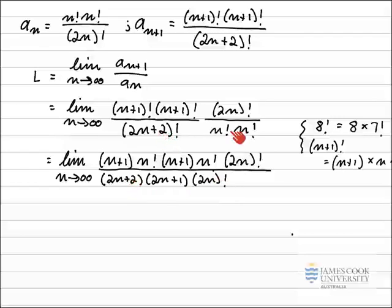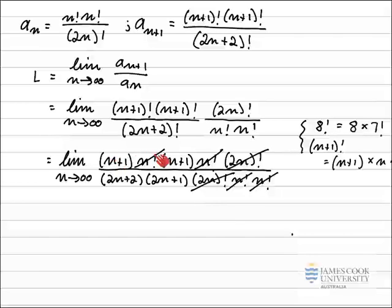That's the first factor on the bottom line. Also on the bottom line we have n factorial times n factorial. Now we have common factors on the top and bottom: we can cancel one n factorial with an n factorial, another n factorial with an n factorial, and the 2n factorial with the 2n factorial. That's good because now we don't have any factorials left over.